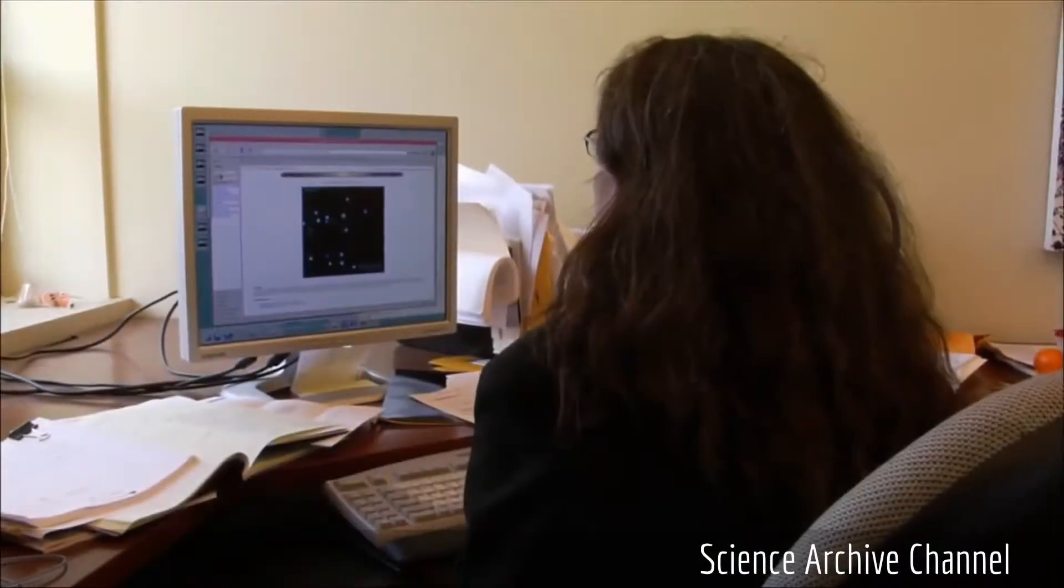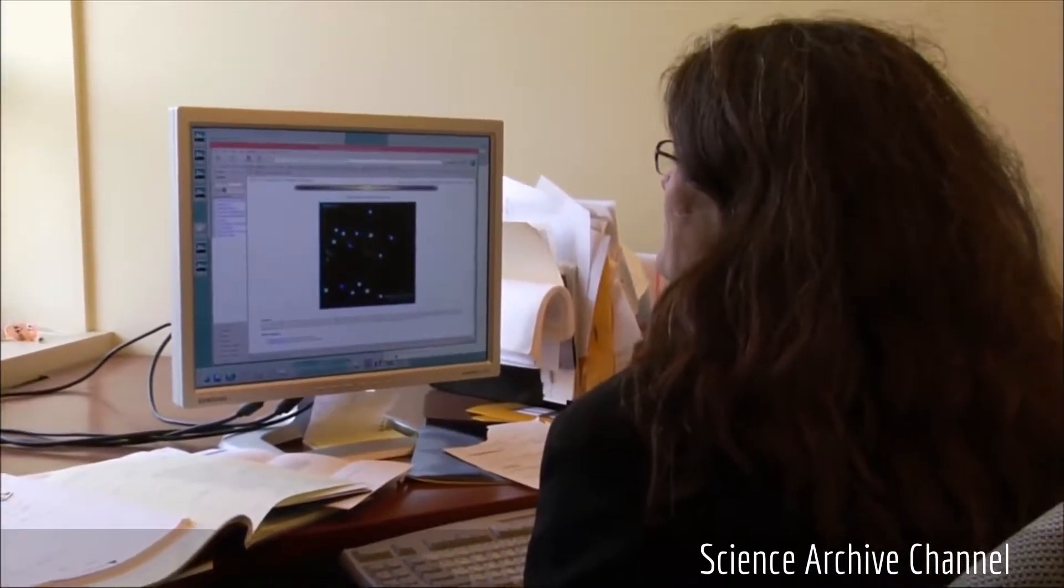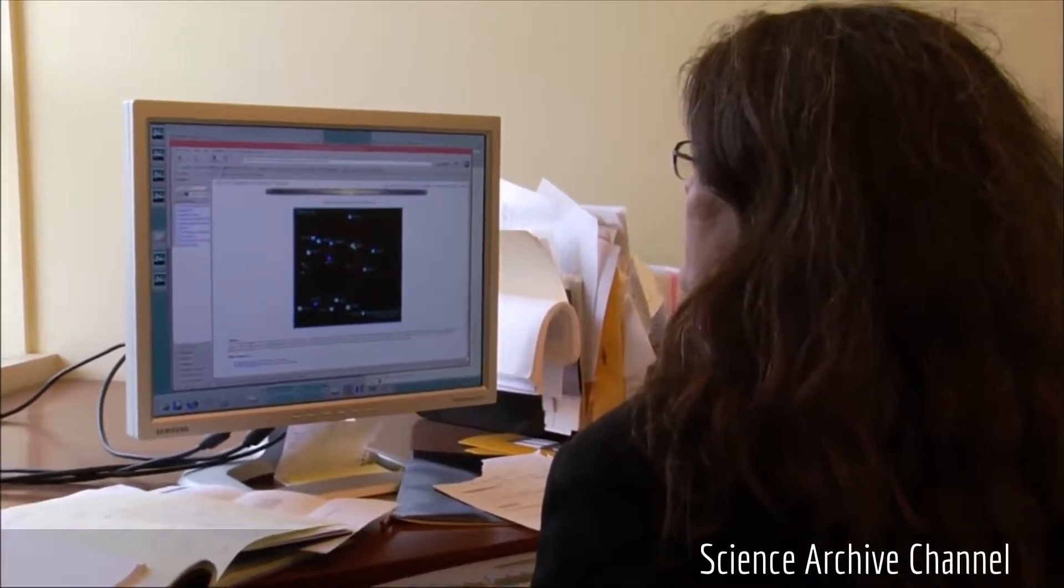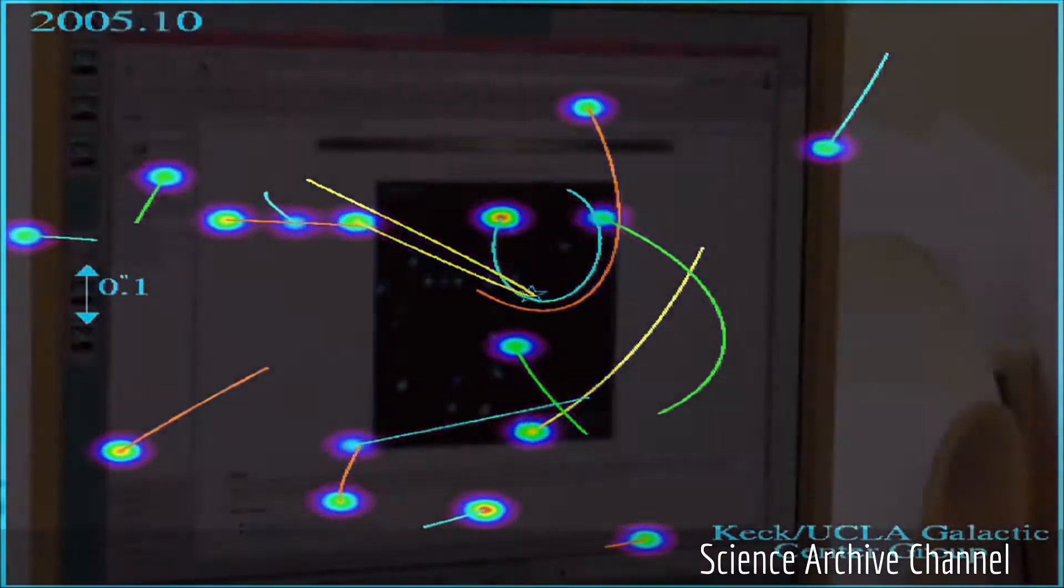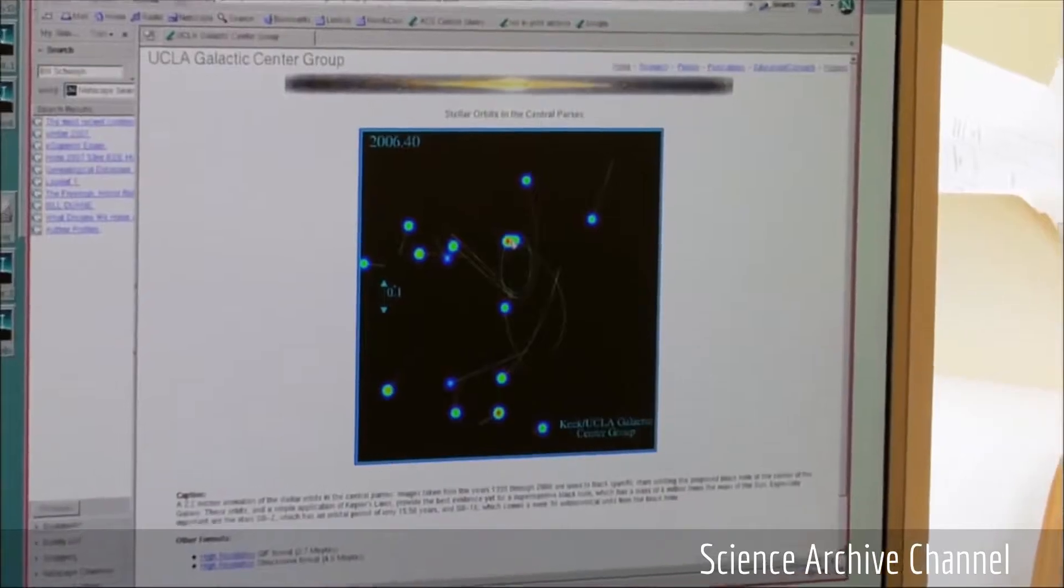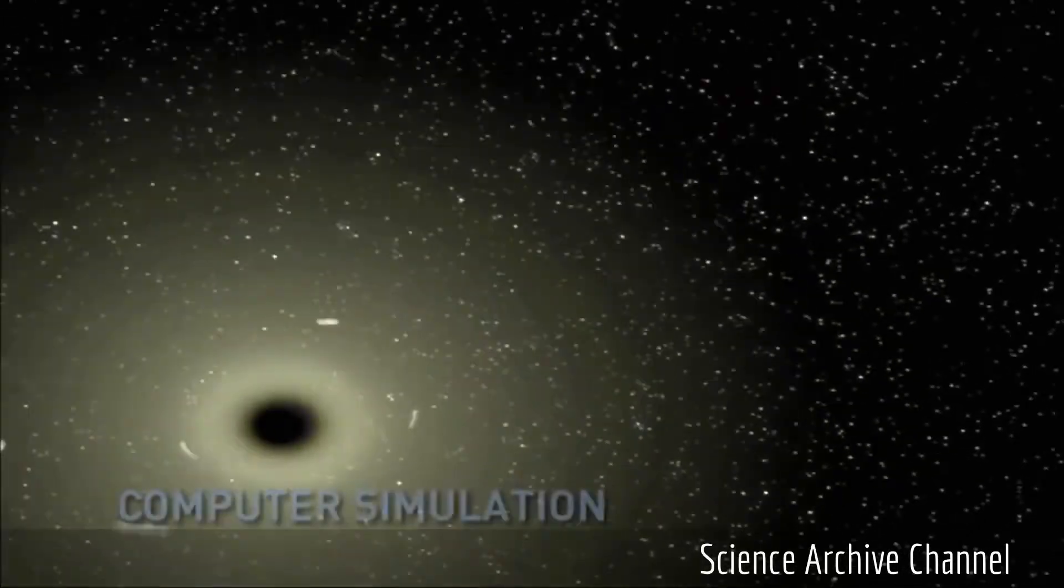And now scientists have discovered there are supermassive black holes, which are millions of times bigger than their stellar mass cousins. Evidence suggests that supermassive black holes were born after the Big Bang, when the universe was first created.